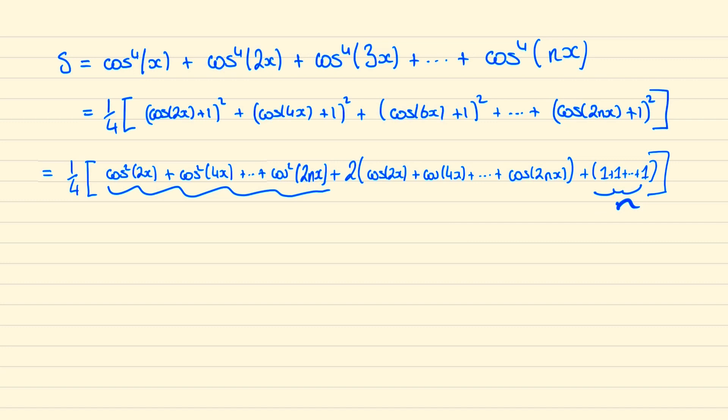Like last time, we have all of these cos square terms which we're going to need to convert into just cos terms. So again we can take advantage of the double angle formula. We can write that cos squared of 2x is equal to a half of cos 4x plus 1, and likewise cos squared of 4x is equal to a half of cos 8x plus 1.